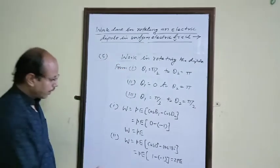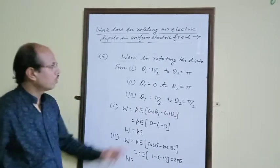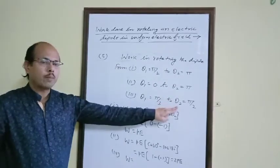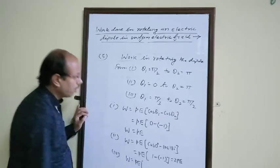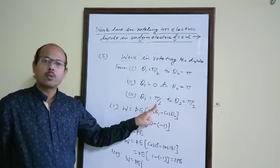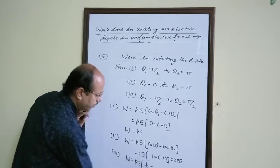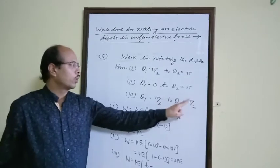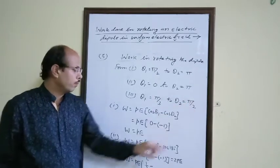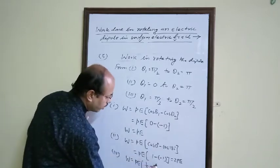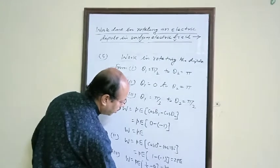Case 3: theta₁ = π/3 to theta₂ = π/2. W equals PE(cos π/3 minus cos π/2) equals PE(1/2 minus 0) equals PE/2.